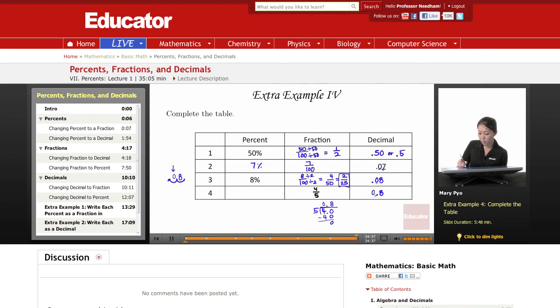And then from decimal to percent, make it bigger, right? So 0.8. That means I have to move it to the right. Two spaces. So I go 1, 2. Empty space. Put a 0. Becomes 80%. Okay. Well, that is it for this lesson. Thank you for watching. Educator. Thank you.